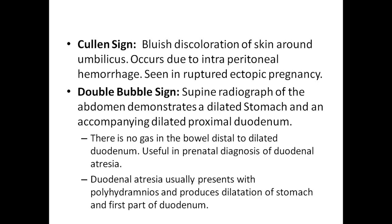Collin sign is bluish discoloration of skin around the umbilicus. It occurs due to intraperitoneal hemorrhage, seen in ruptured ectopic pregnancy.